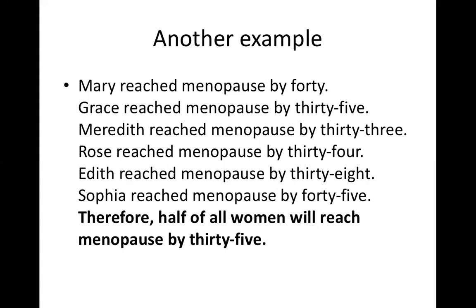Another example: Mary reached menopause by 40, Grace reached menopause by 35, Meredith reached menopause by 33, Rose reached menopause by 34, and so on. So there are six premises here — three women reached menopause before or by 35, and three reached menopause after 35. The conclusion is therefore: half of all women will reach menopause by 35.